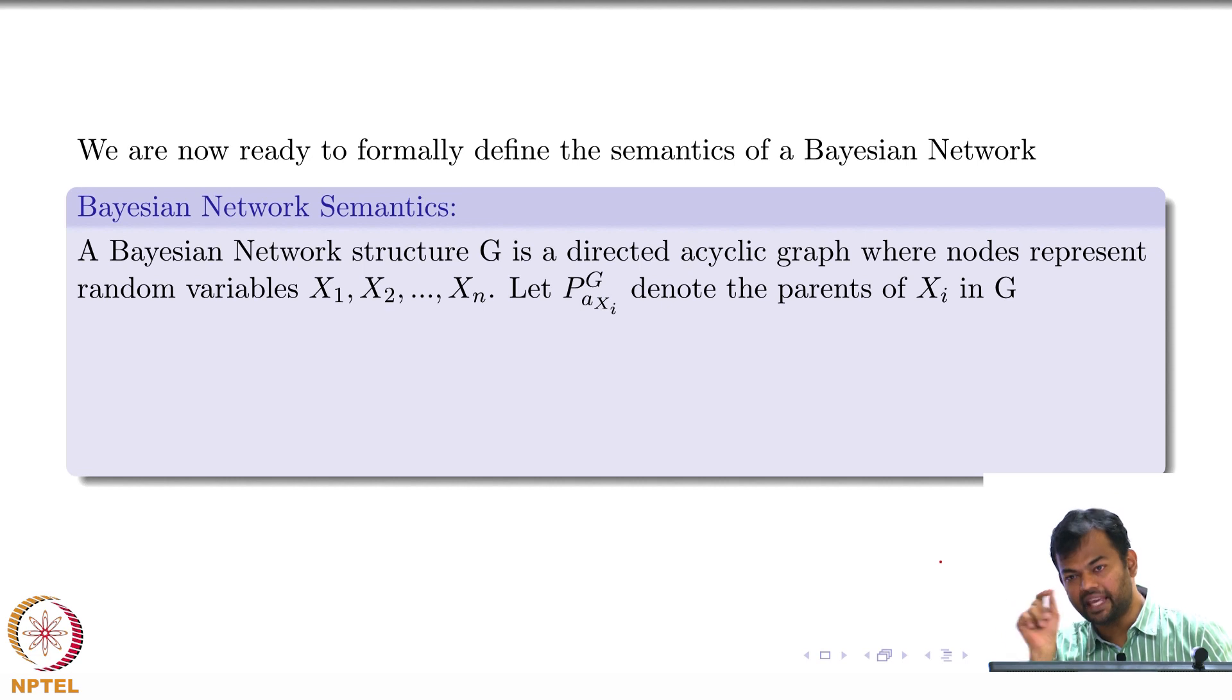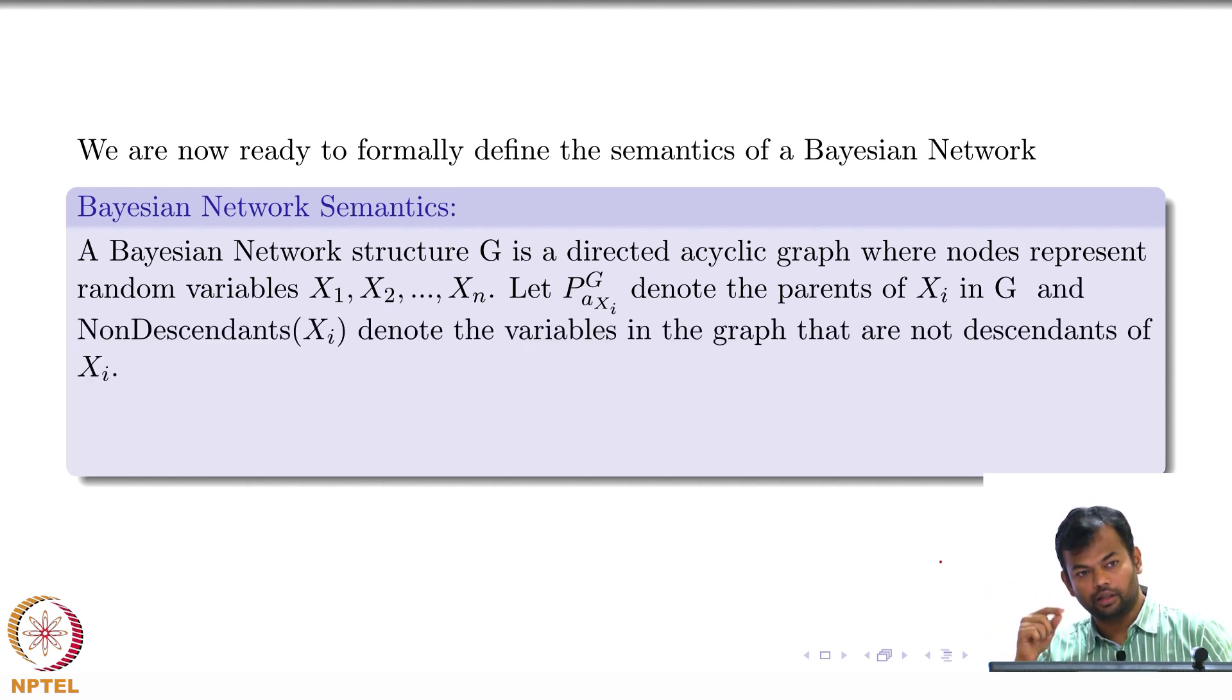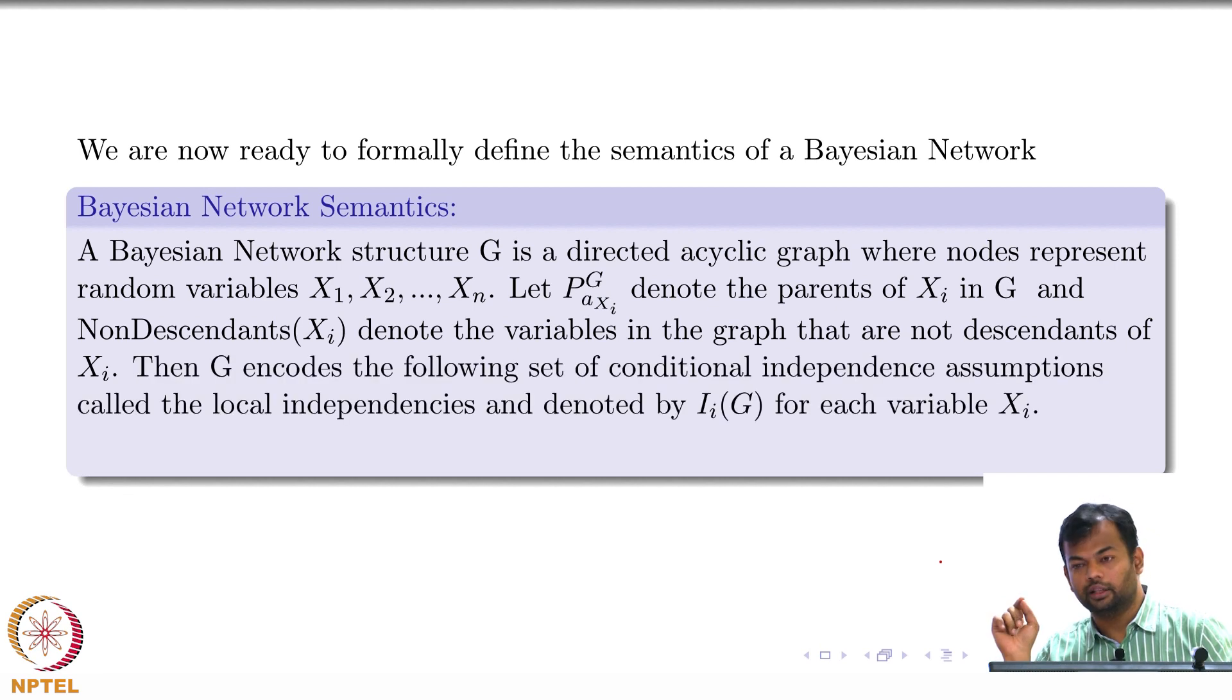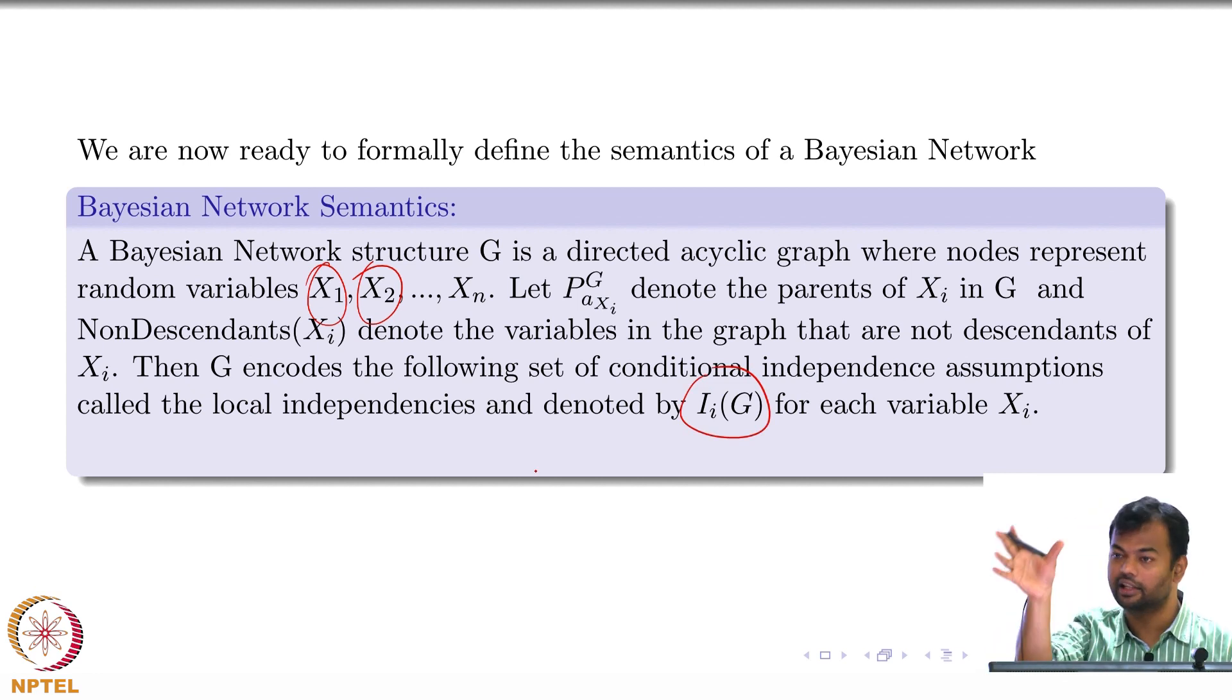So PA of Xi is all the parents of Xi, and non-descendants of Xi denote the variables in the graph that are not descendants of Xi. Then G encodes a set of independence relations or assumptions for every variable in the graph, for all these Xi's. Can you give me that rule in a single sentence, in a single expression which encompasses all the rules that we have seen so far?